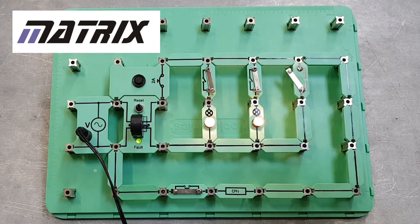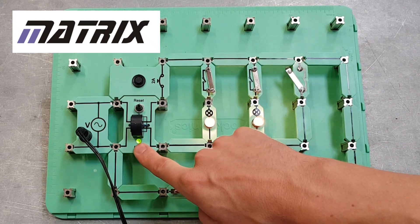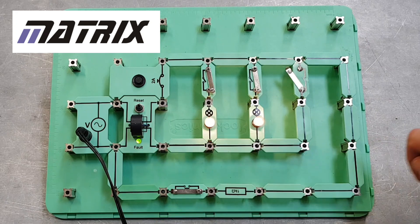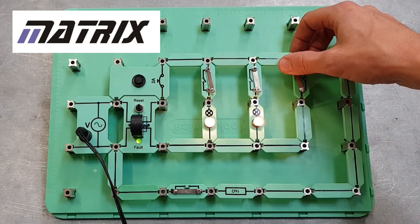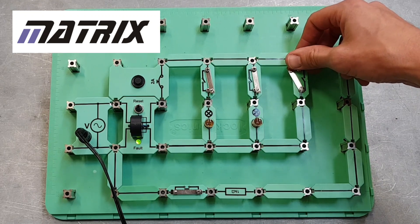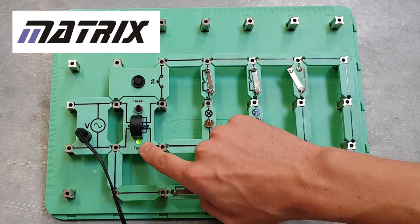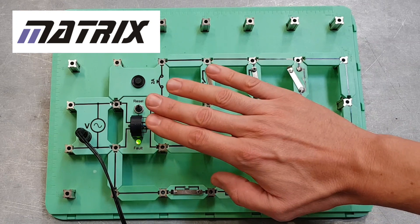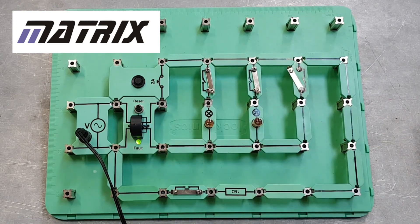Here the current is going to flow from the line directly to the neutral and it's going to operate one of the devices. Keep your eye on the green LED there - if it's green that means it's working fine. Let's just pop that on there. The circuit has tripped, but look - the RCD hasn't tripped.